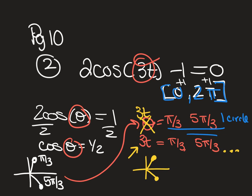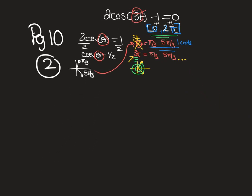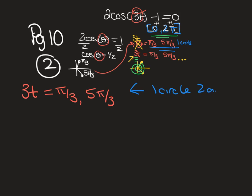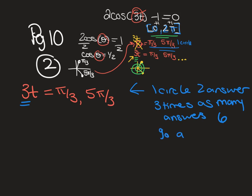Those two values are answers, but you can go all the way around the circle and find more. There are answers on more than one circle. The 3t tells you how many sets of answers to write: on one circle there were two answers, so with 3t we need three times as many — six total — meaning we go around the circle three times.